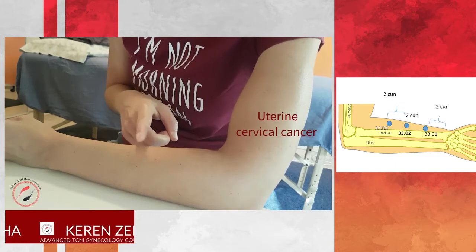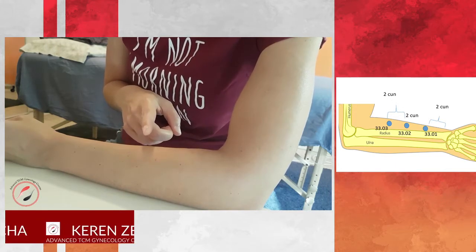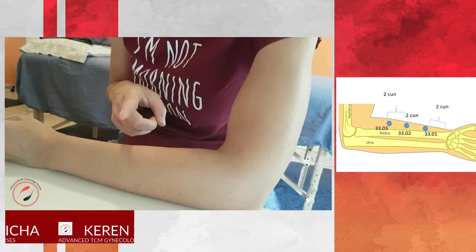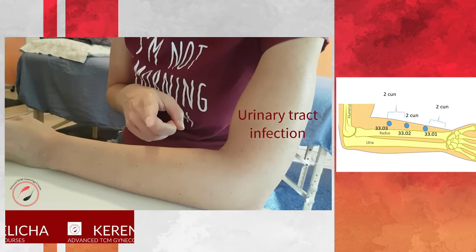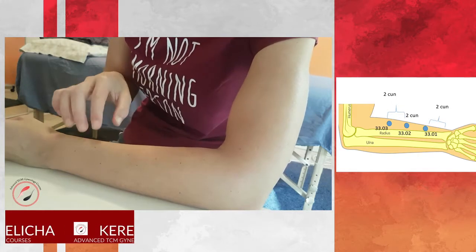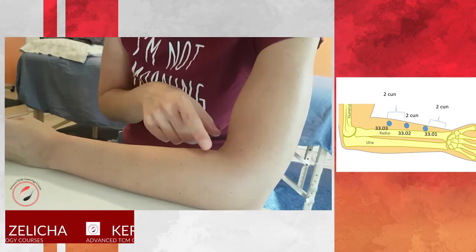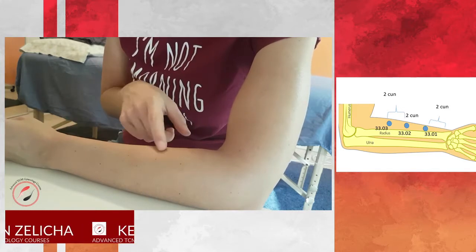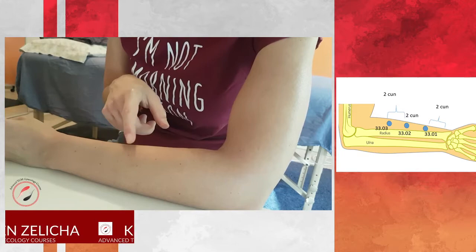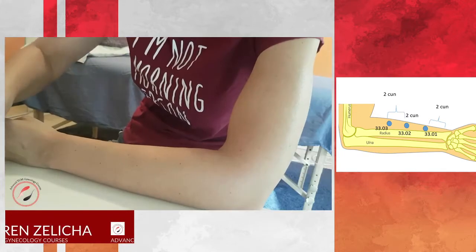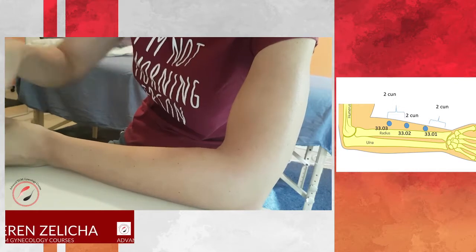Also think about UTI, bladder inflammation, urinary inflammation, since these points are indicated for harmonizing the lower jiao and facilitating the qi in the lower jiao. So how do we puncture these points?